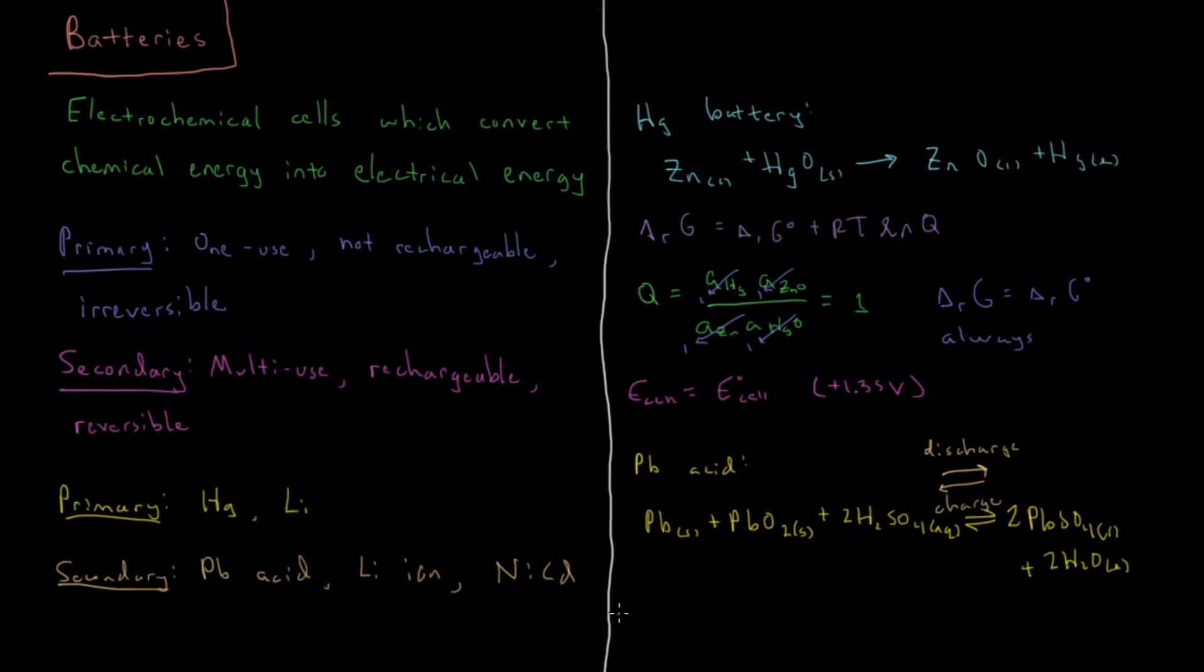Our reaction quotient for this would be the activity of water squared times the activity of lead sulfate also squared because of that coefficient, divided by the activity of solid lead times the activity of lead oxide times the square of the activity of H2SO4. But again, most of these are in condensed phases: water is liquid, lead sulfate is solid, lead is solid, lead oxide is solid. So in fact, the only thing which is going to affect the energy of reaction and thus affect the EMF, the voltage of the battery output, is it's going to be basically proportional to the inverse square of the concentration of sulfuric acid.